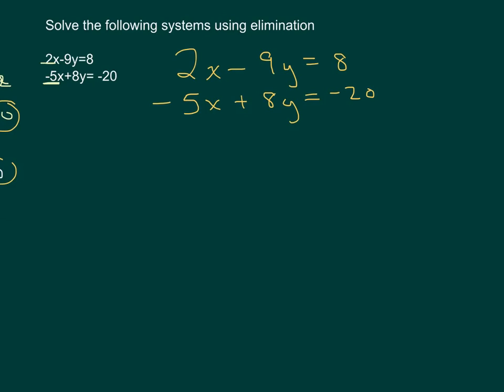And we have negative 5x plus 8y equals negative 20. Now what I'm going to do is I need to multiply both the top and the bottom equation to make these the same number, both 1 being positive and 1 being negative. Basically what I want to do is make both of these the LCM. So what is the LCM between 2 and 5? We said it was 10. So I'm going to multiply the top one by 5, and we're going to multiply the bottom one by 2.